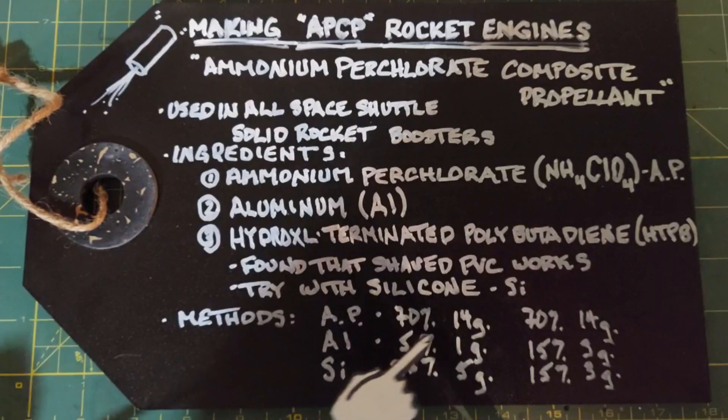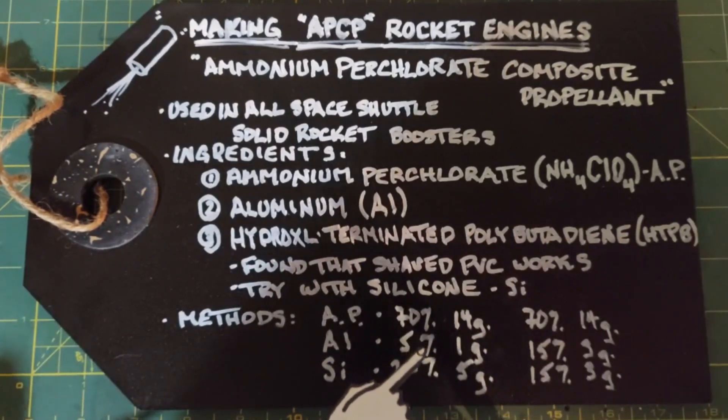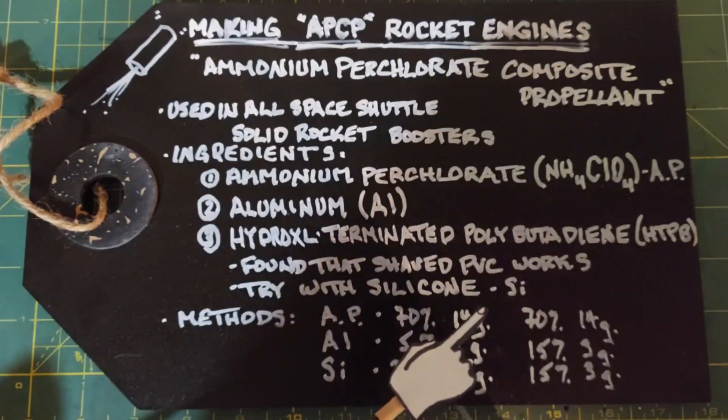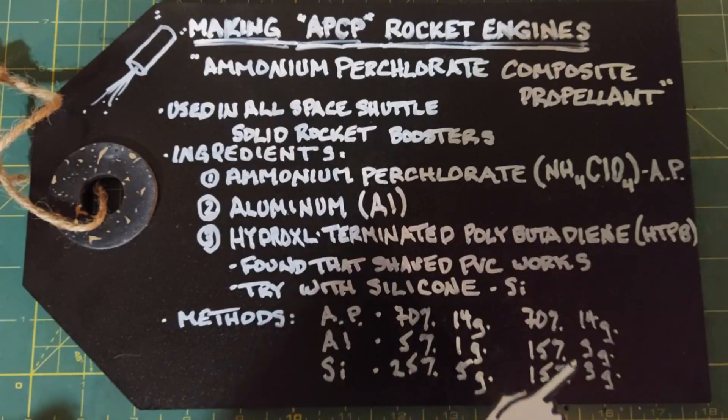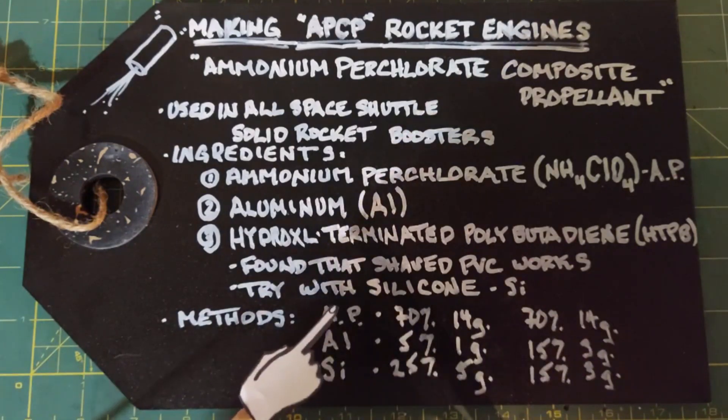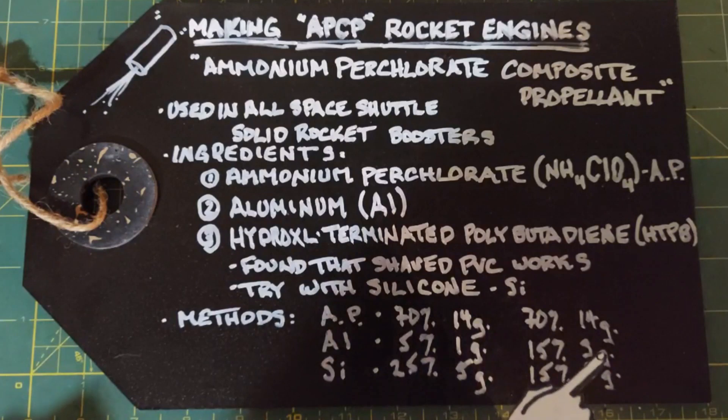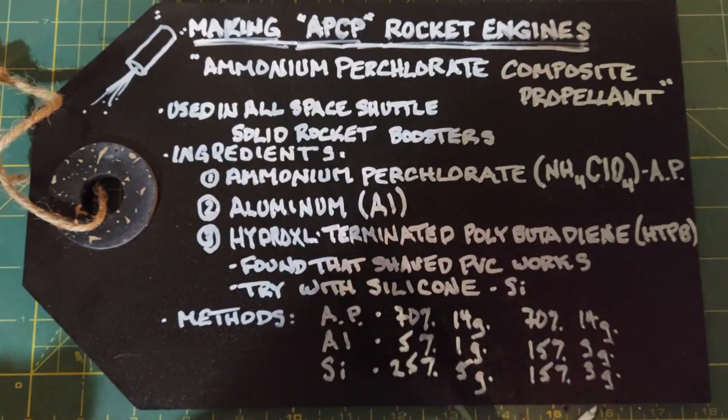In the methods here I'm going to do two different tests. The first test: ammonium perchlorate will be 14 grams, aluminum 1 gram, and silicone 5 grams with these corresponding percentages. In the second test I'll also be using 14 grams of ammonium perchlorate, but I'll be using 3 grams of aluminum and 3 grams of silicone instead. Let's go do it.